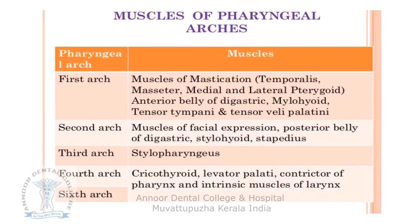The fourth and sixth arches give rise to the cricothyroid, levator veli palatini, constrictors of the pharynx, and intrinsic muscles of the larynx. These muscles are all supplied by branches of the vagus nerve — specifically the superior and recurrent laryngeal branches.